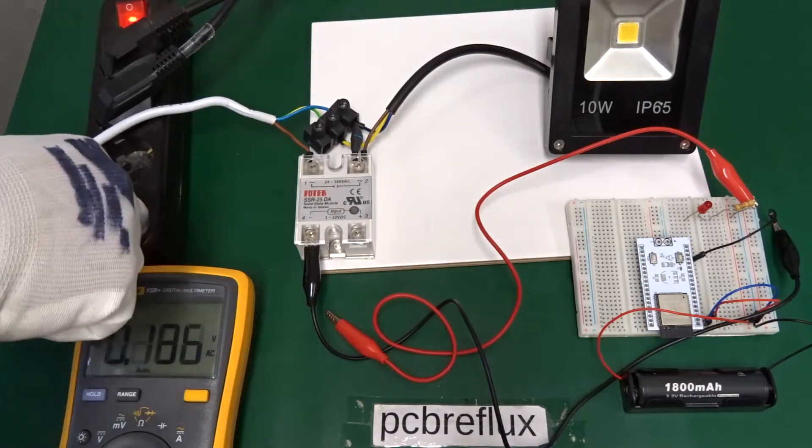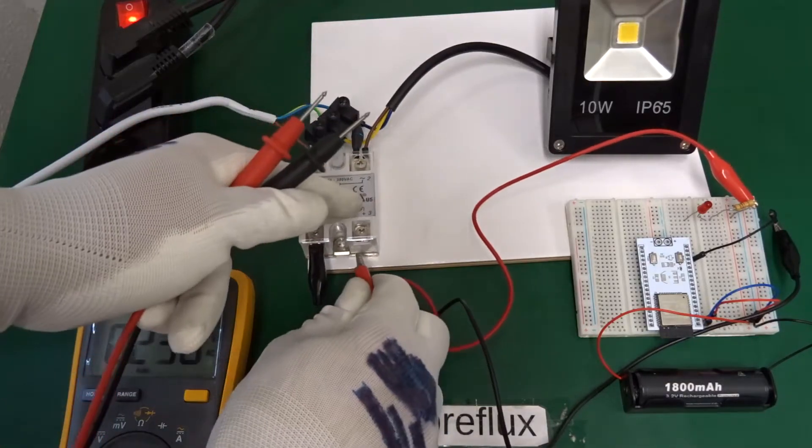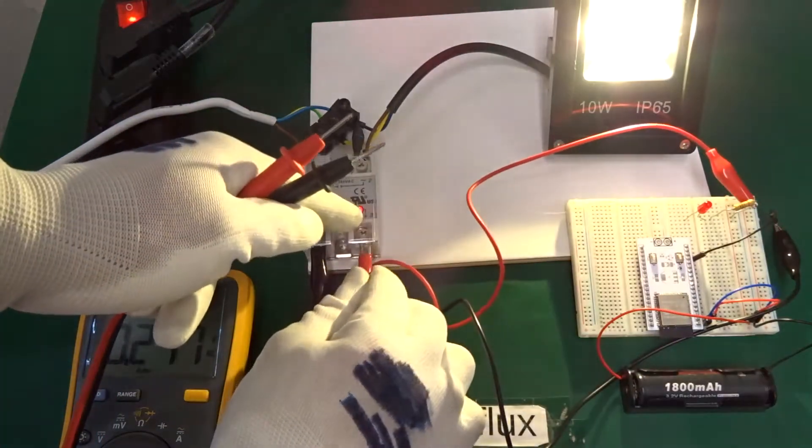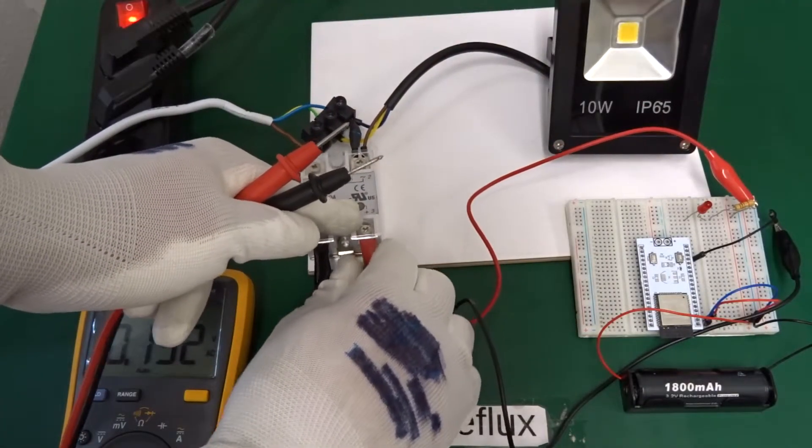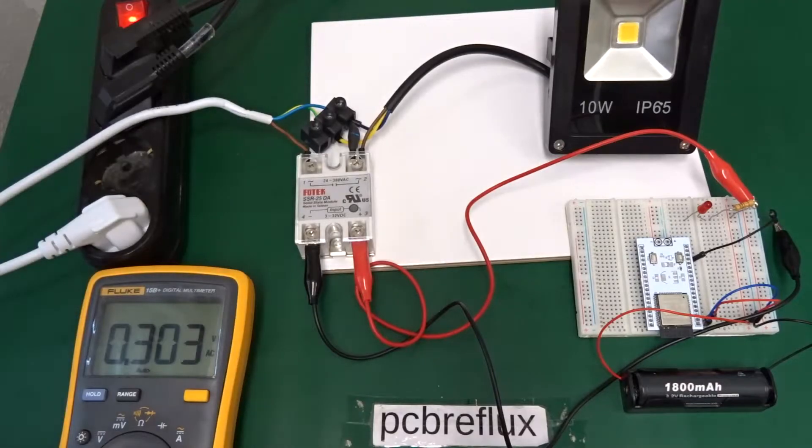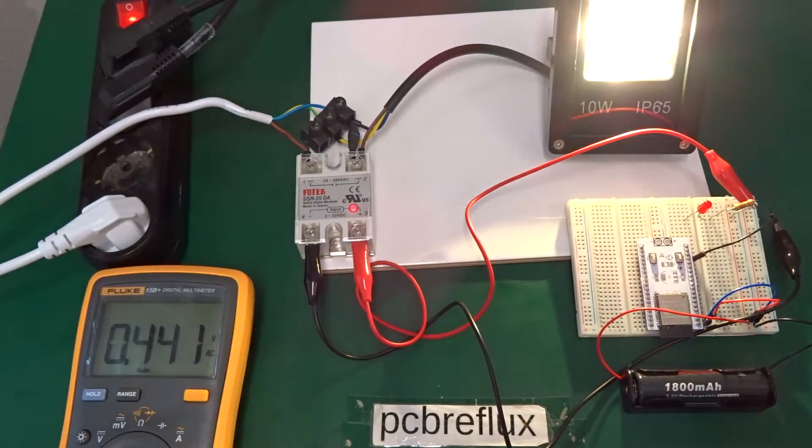So now let's connect our ESP32 to the solid state relay input. And we see that our LED lit up and before we start let's press the reset button.